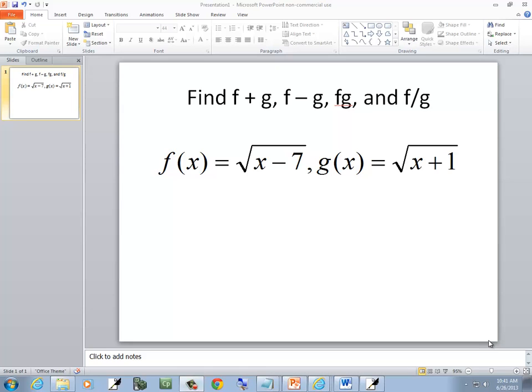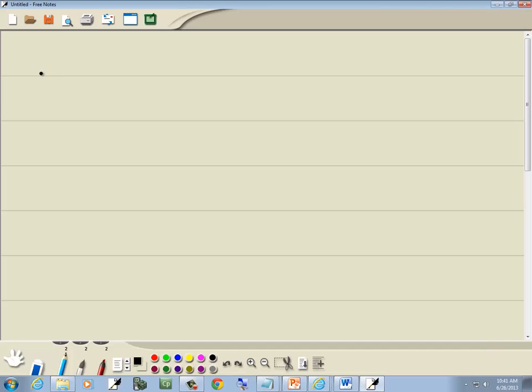In this problem, we want to find f plus g, f minus g, f times g, and f divided by g. So we've got f of x is equal to square root of x minus 7, and g of x is equal to square root of x plus 1.